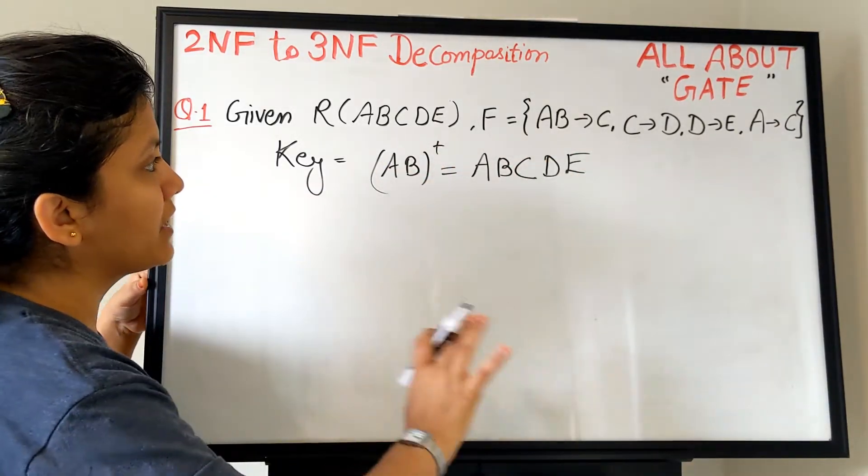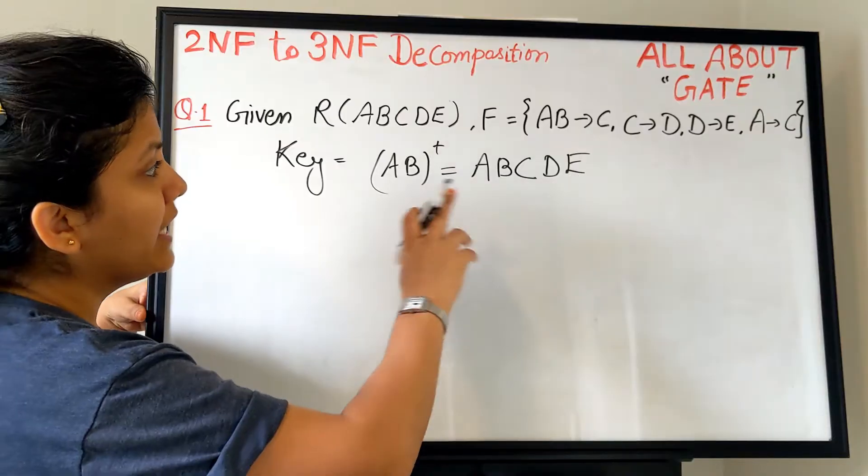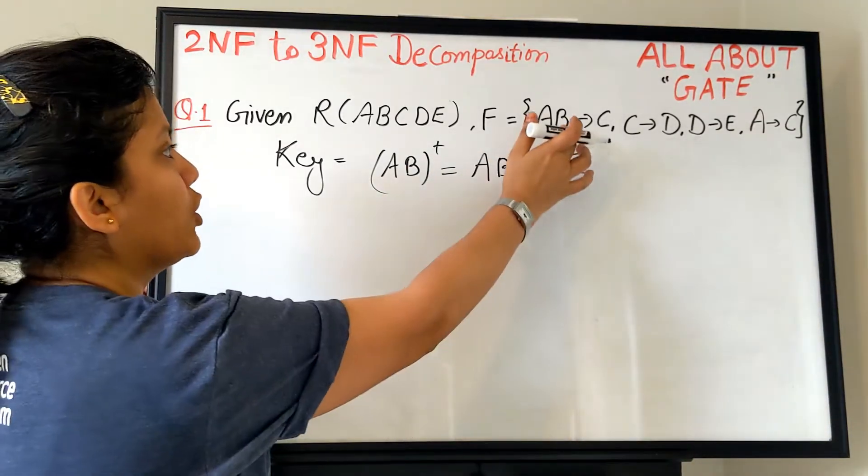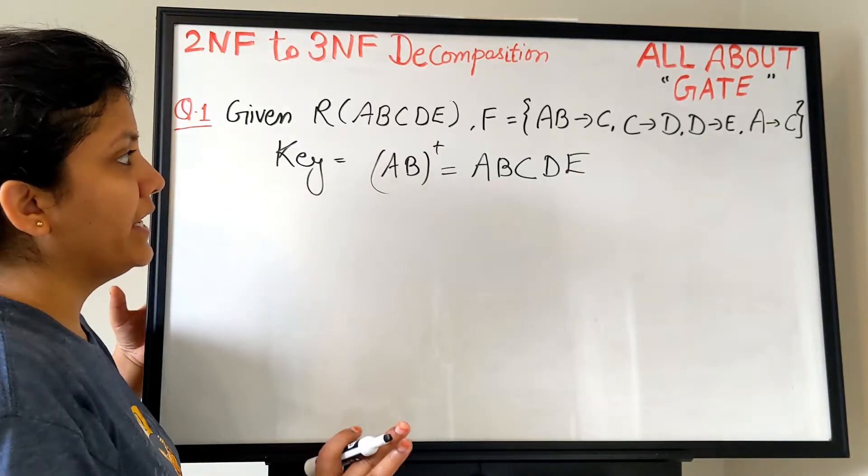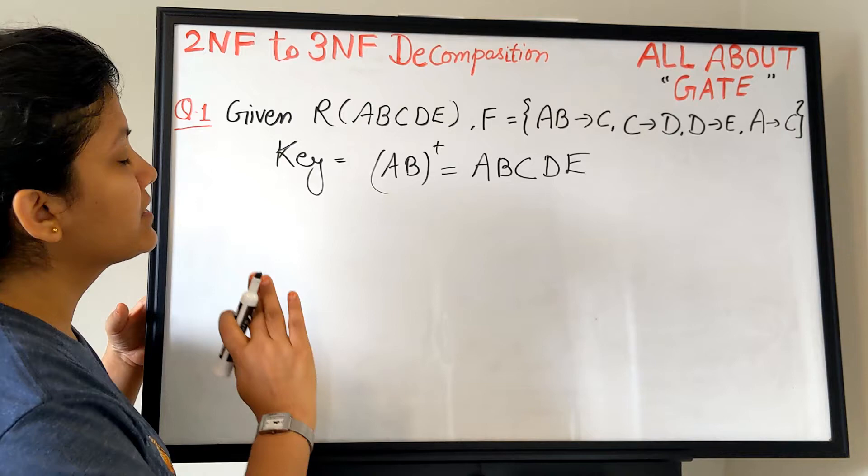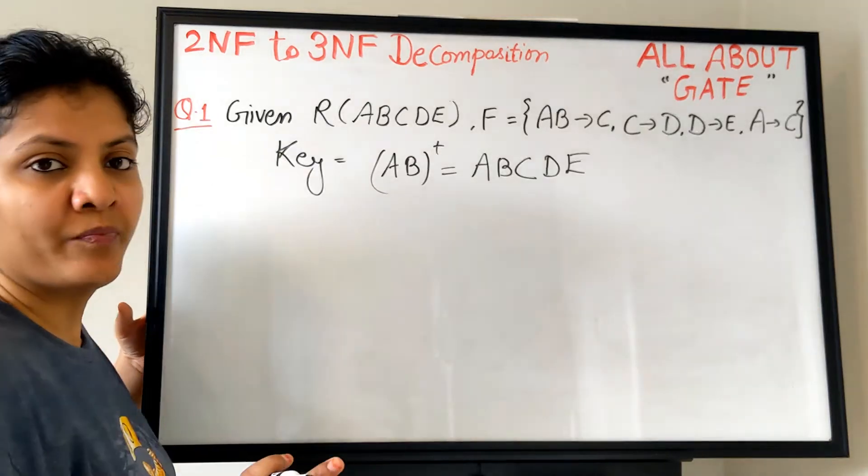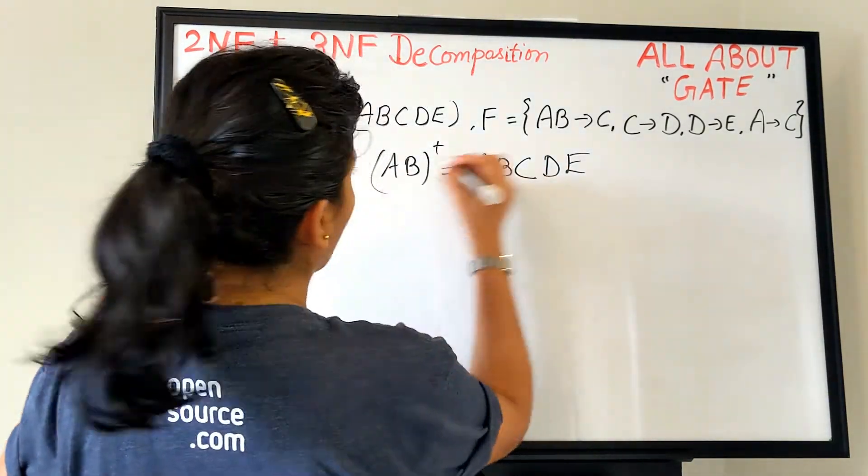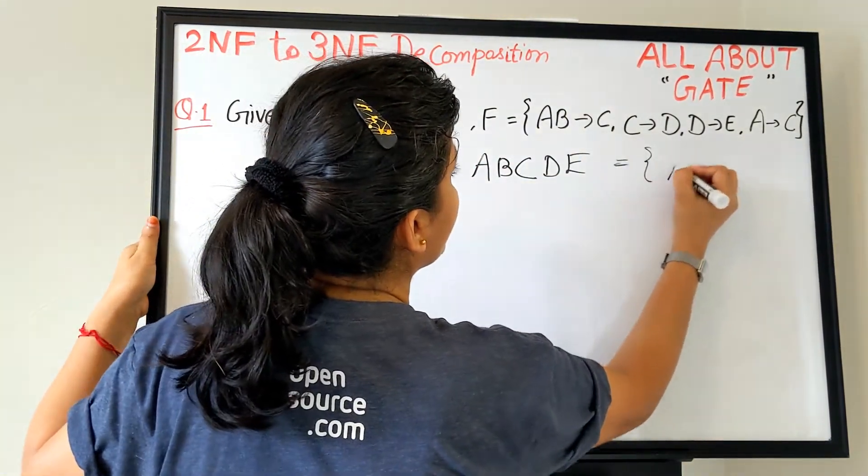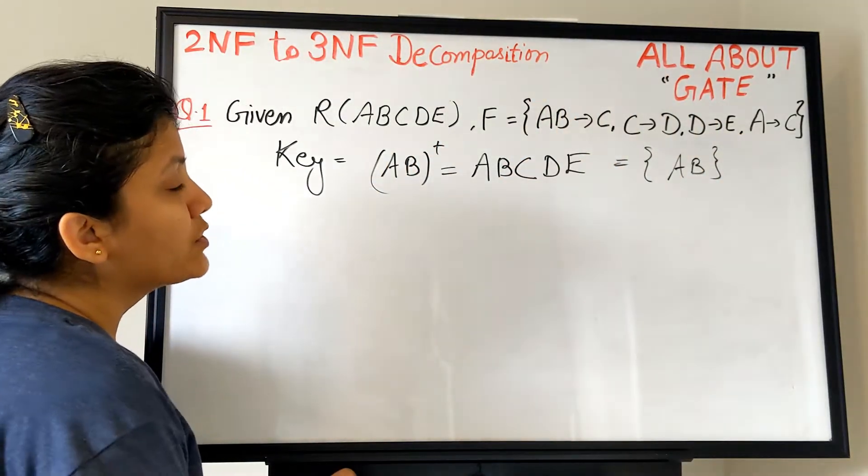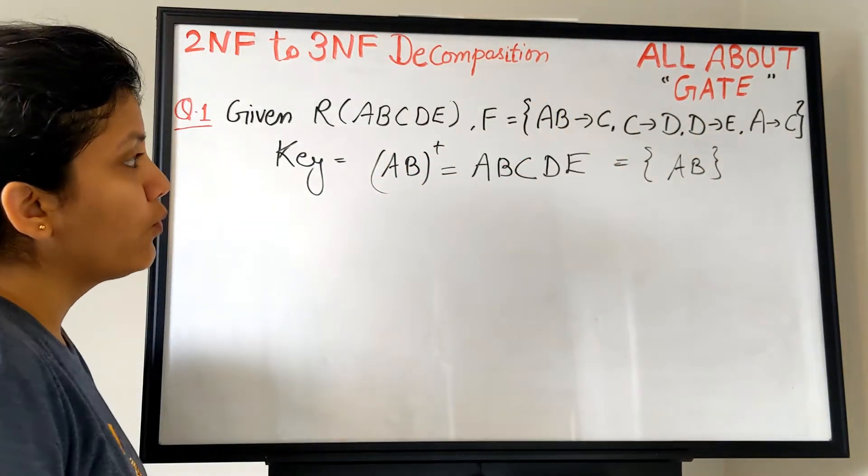Does A is determined by something? No. B is determined by something? No. A+ gives you only A, C, D, E but not B. B+ gives you nothing but only B. No other combination can derive that. So this is the only key. What becomes the key? The key is AB, the single key.